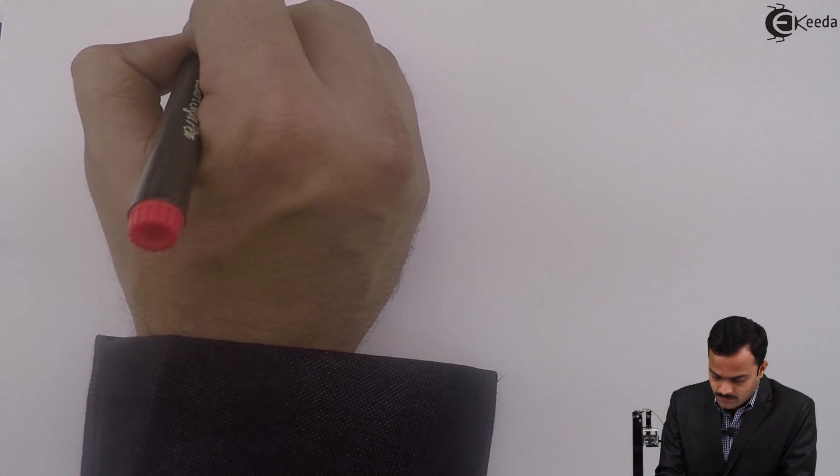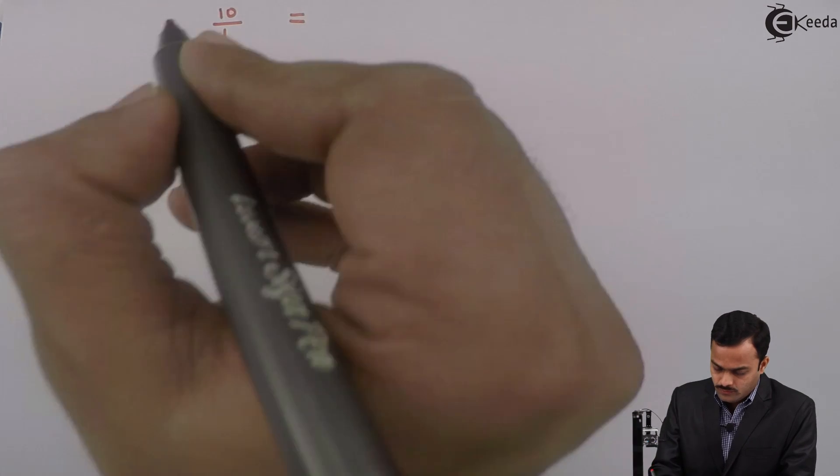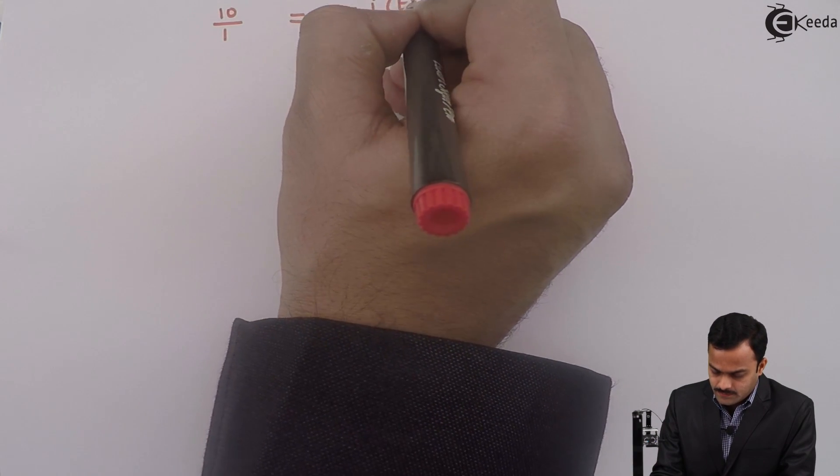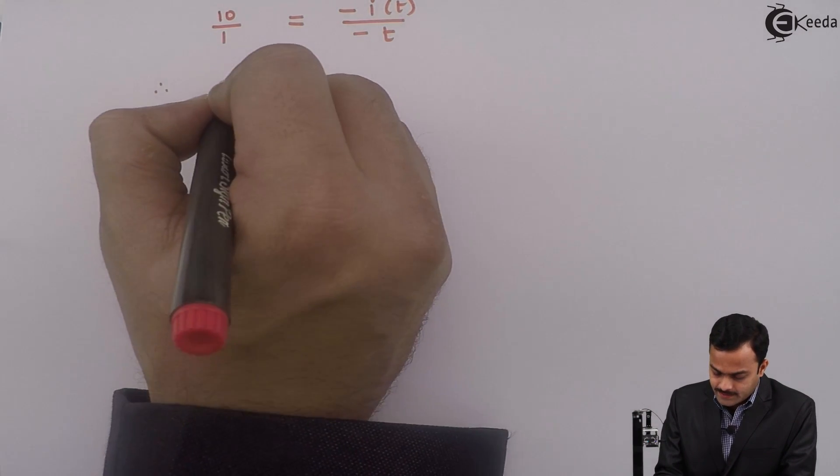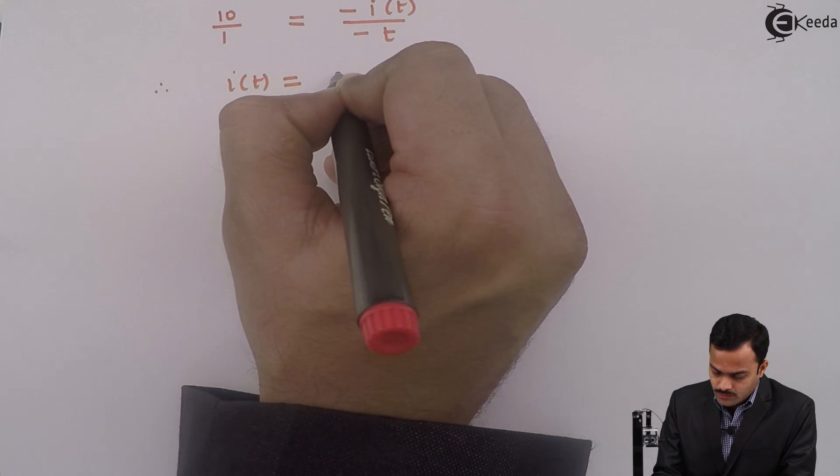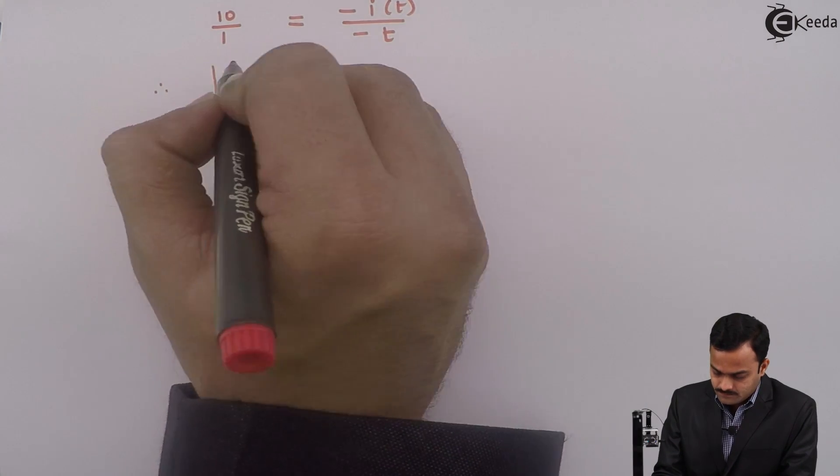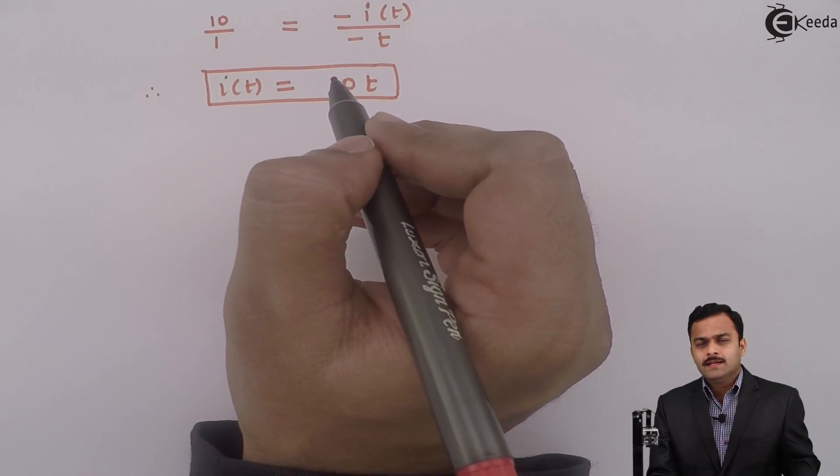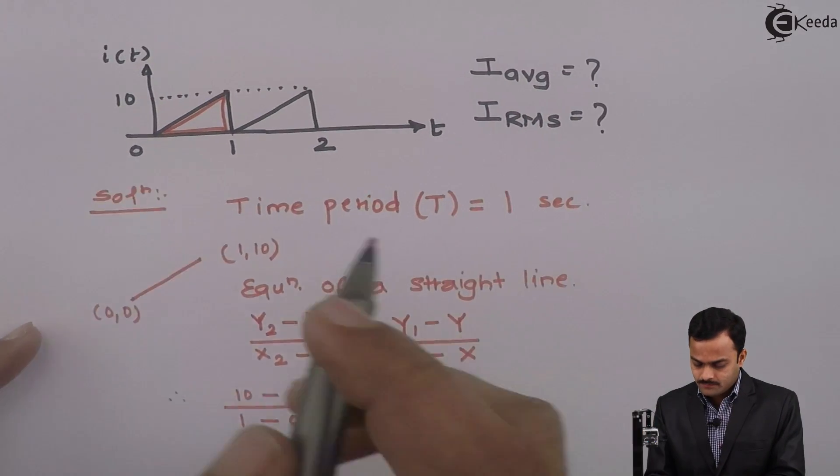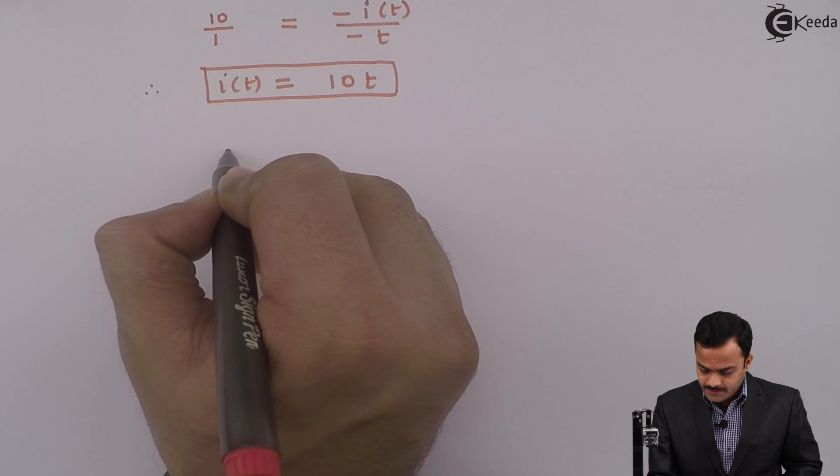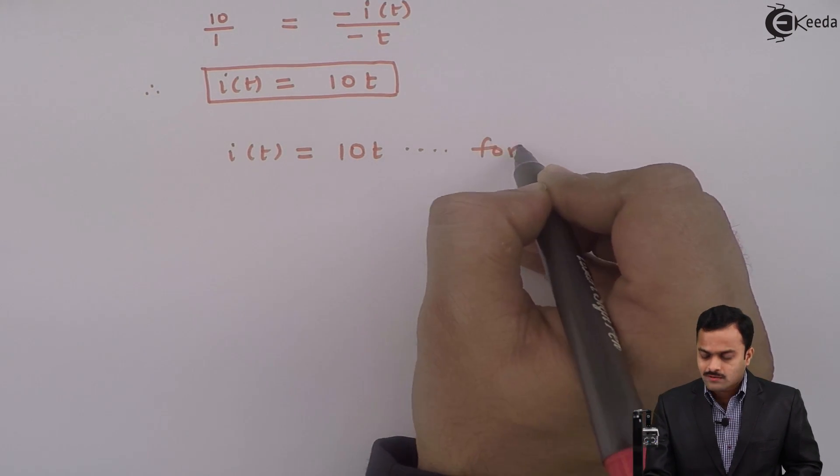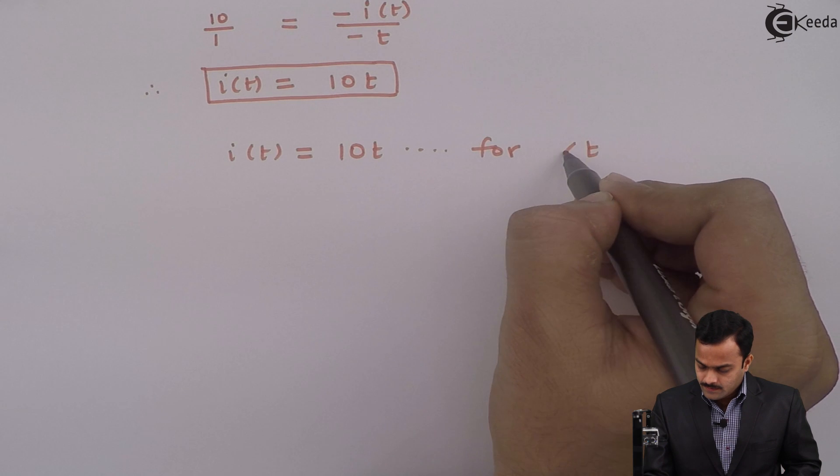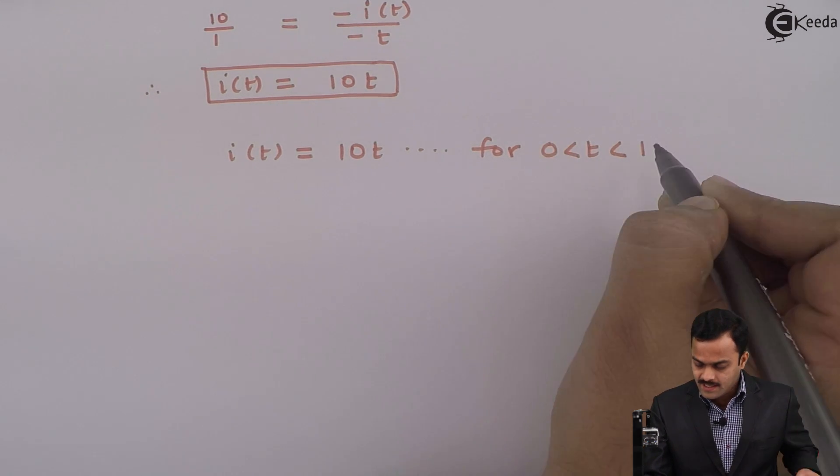If I simplify, 10/1 equals -i(t)/-t. So if I solve, I will get i(t) = 10t. Finally, what I get for this waveform is equation i(t) = 10t for 0 < t < 1.